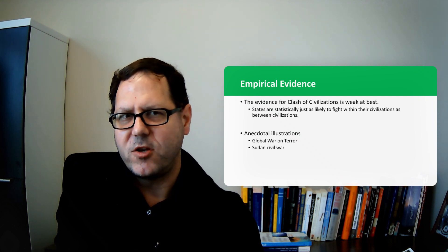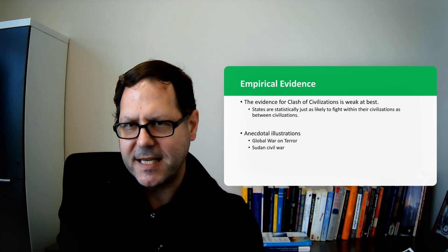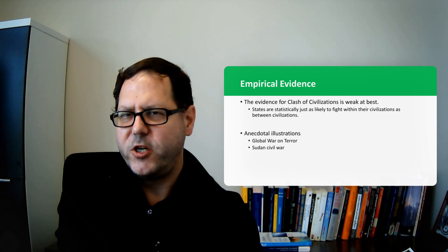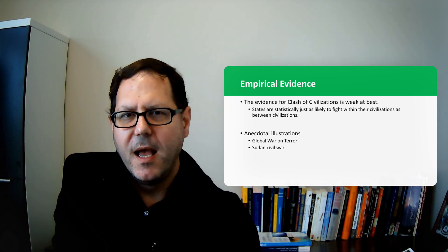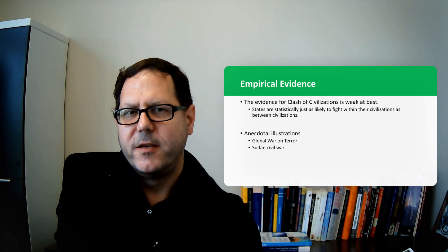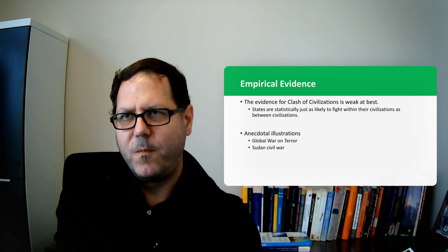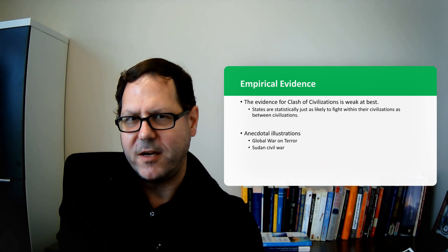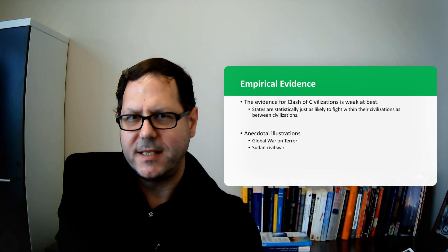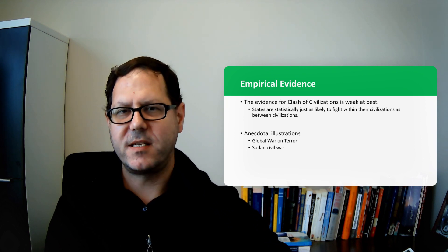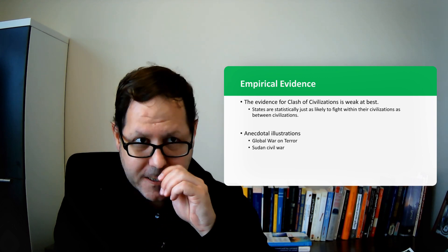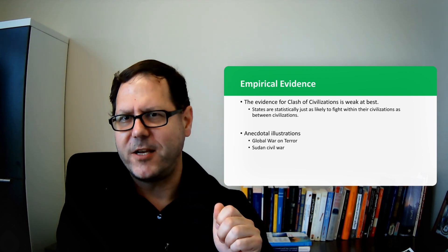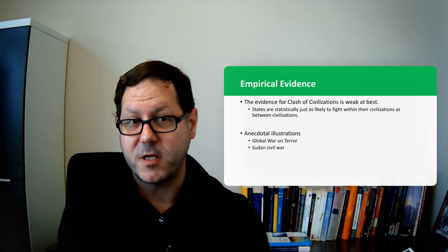What we find is that states are just as likely statistically controlling for things like geography, controlling for things like political systems, controlling for things like trade, they're just as likely to fight countries who are within their civilization as defined by Sam Huntington as between civilizations. Again as defined by Sam Huntington. So we're not really seeing that civilization is an important part of the story at least in terms of where countries end up getting into war.